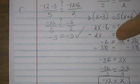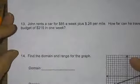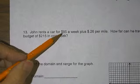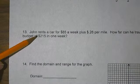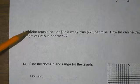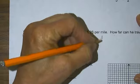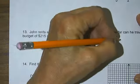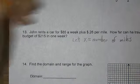What's next? Problem 13. John rents a car for $85 a week plus 26 cents a mile. How far can he travel on a budget of $215 in one week? Okay, what does it cost? Well, let x equal the number of miles John can drive.